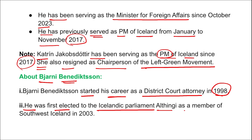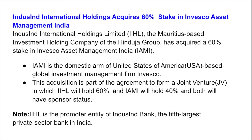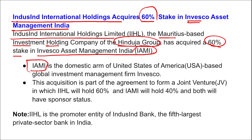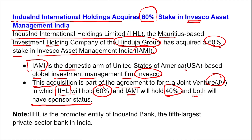In the same International Holding Limited — the Mauritius-based investment holding company of the Hinduja Group — they acquired a 60 percent stake in Invesco Asset Management India (IAMI). IAMI is the domestic arm of the USA-based global investment management firm Invesco. The acquisition is part of an agreement to form a joint venture in which IIHL will hold 60 percent and IAMI will hold 40 percent. Both will have sponsor status, and IIHL is also the promoter entity of IndusInd Bank, the fifth largest private bank in India.